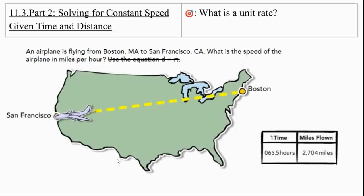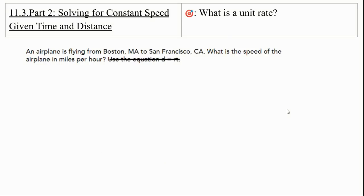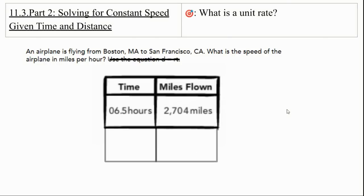So we have a little map here. And the map says we're flying from Boston to San Francisco. What's the speed of the airplane in miles per hour? And they gave us a table. The time and the amount of miles flown. I'm going to make that table a little bit bigger and extend it for you. So we have our time, which was 6.5 hours, and miles flown, which is 2,704 miles.